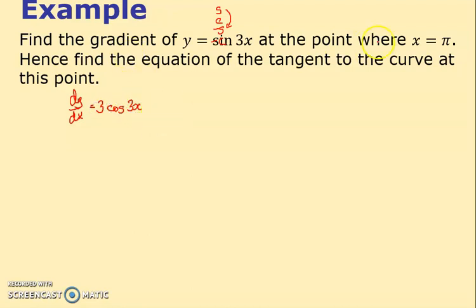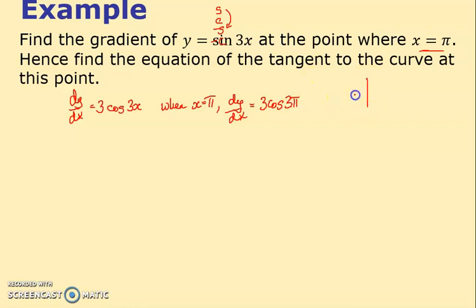Find the gradient when x = π: dy/dx = 3cos(3π). The cos graph — at 3π, cos equals -1. So the gradient is 3 × (-1) = -3.